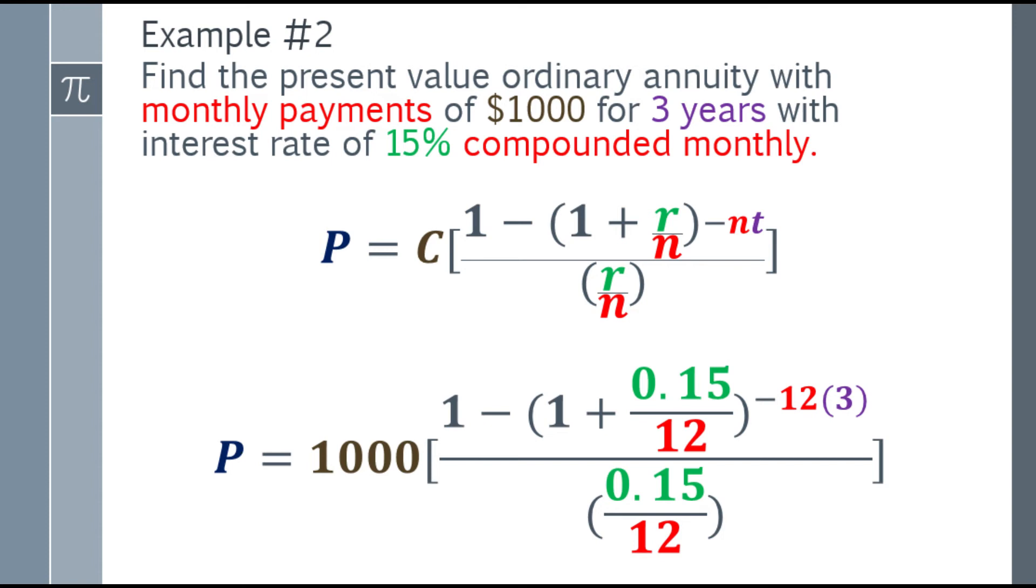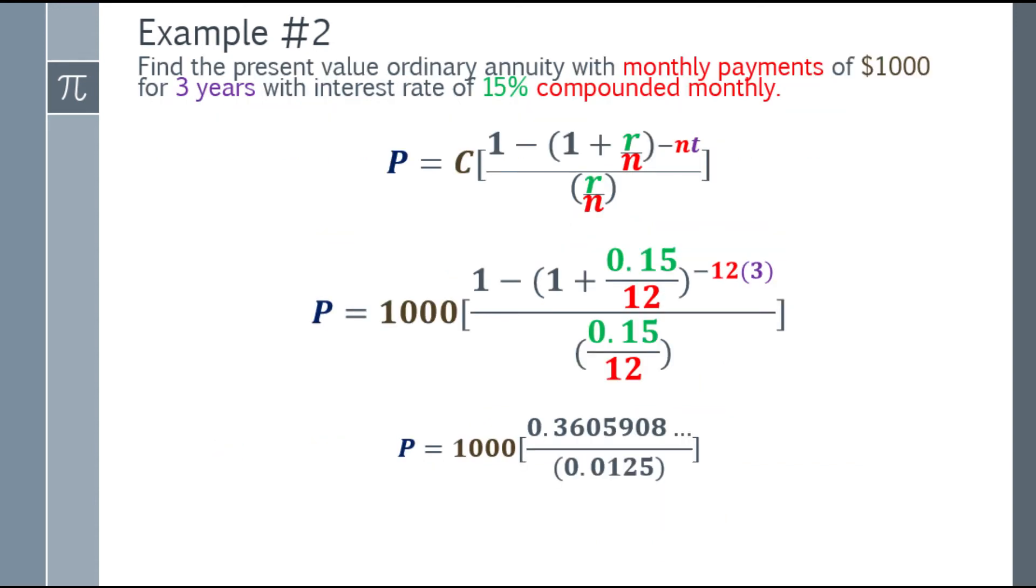Now simplify the numerator and denominator. The numerator is 0.3605908 and so on. The denominator is 0.0125.